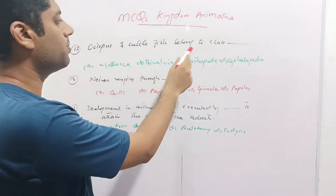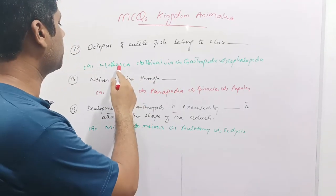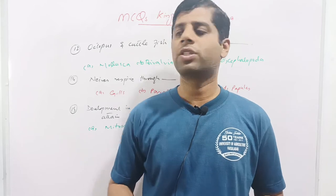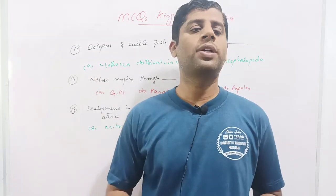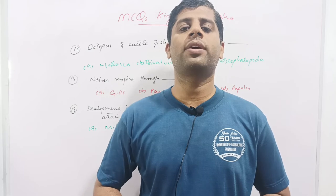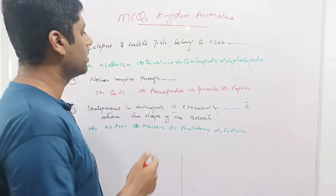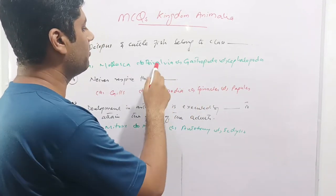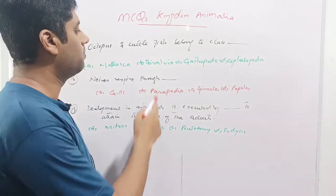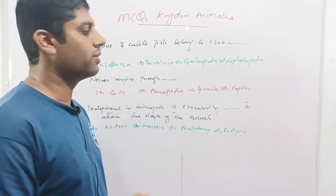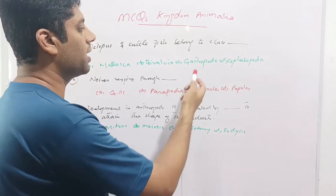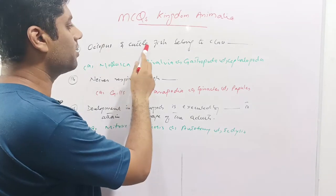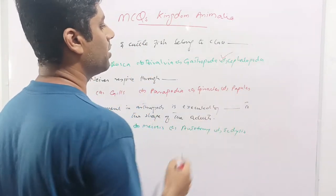Next question: octopus and cuttlefish belong to which class? Options are Mollusca, Bivalvia, Gastropoda, or Cephalopoda. Octopus and cuttlefish belong to phylum Mollusca, but the question asks for the class. Mollusca is a phylum, not a class. Bivalvia includes two-shelled animals; Gastropoda includes animals with a large muscular foot like snails; Cephalopoda includes animals where feet are attached to the head. Octopus and cuttlefish belong to class Cephalopoda of phylum Mollusca.